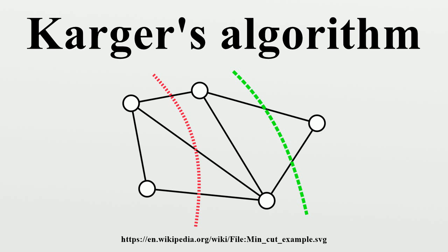Karger's basic algorithm iteratively contracts randomly chosen edges until only two nodes remain. Those nodes represent a cut in the original graph. By iterating this basic algorithm a sufficient number of times, a minimum cut can be found with high probability.